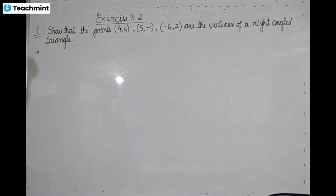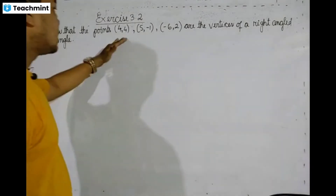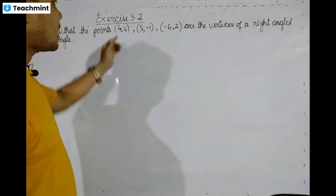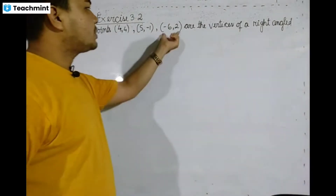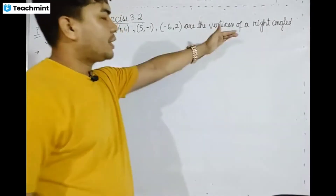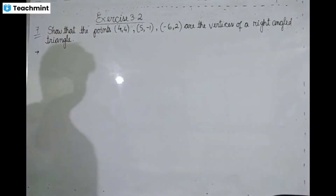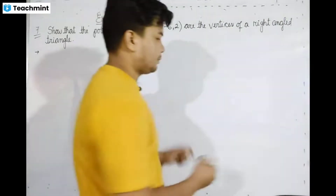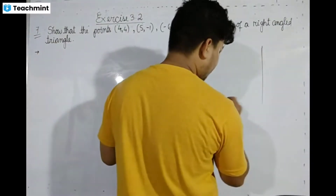So these are the points. Four four, five minus one, minus six two — verify these are the vertices of a right angle triangle. I'm going to give the vertices and prove it is a right angle triangle.